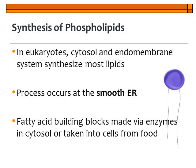First, we're going to look at the synthesis of phospholipids, specifically in eukaryotic cells — cells that have a nucleus and those membrane-bound organelles from Chapter 4. In eukaryotic cells, the cytosol and the endomembrane system are responsible for synthesizing most of the lipids in the cell. Specifically, phospholipids are created or processed in the smooth endoplasmic reticulum. The building blocks — fatty acid tails — are either made using enzymes in the cytosol, or taken from food that the cell has brought in.